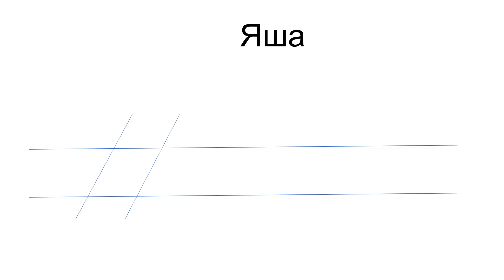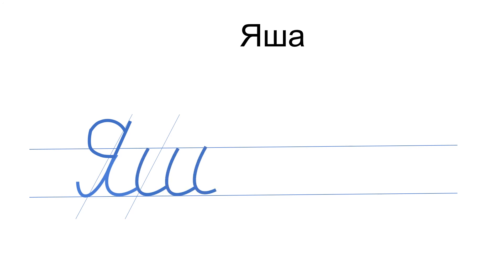The name I picked is Яша — Yasha. It's the diminutive form of Яков — Jacob. We start with capital Я, finish with the hook, then connect Ш — very easy, three hooks: one, two, three. Then finish with an R oval and hook. Яша — Yasha. Keep the angle; keep all letters between the two horizontal lines.